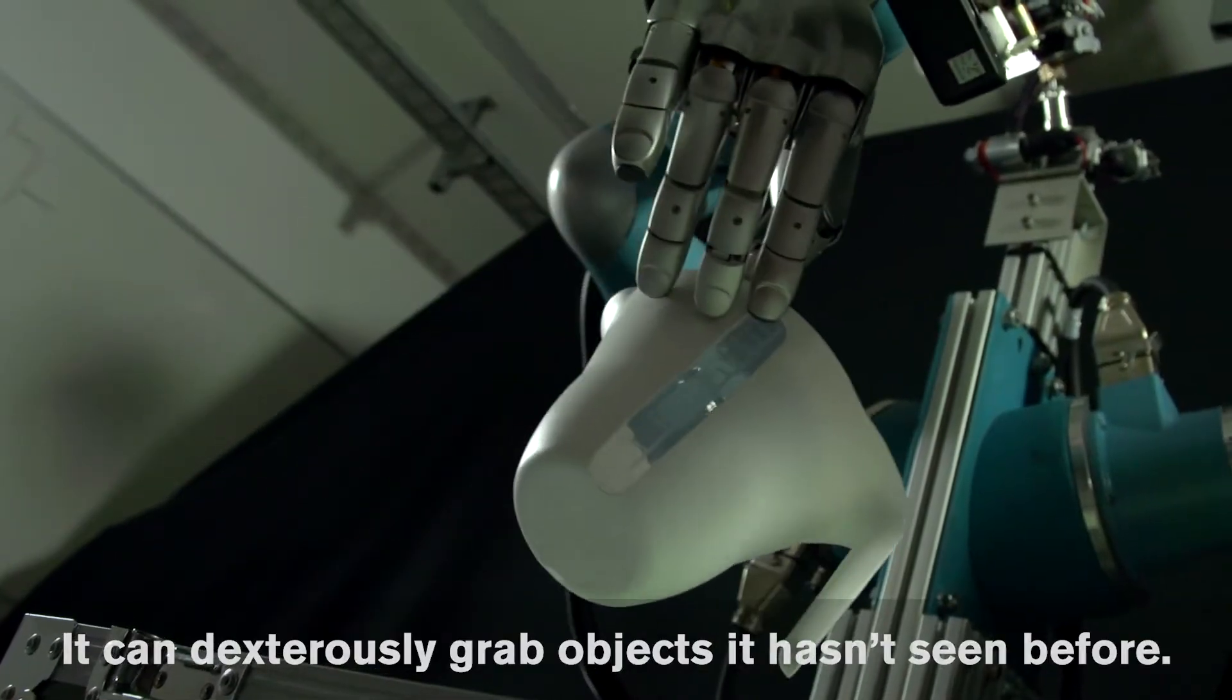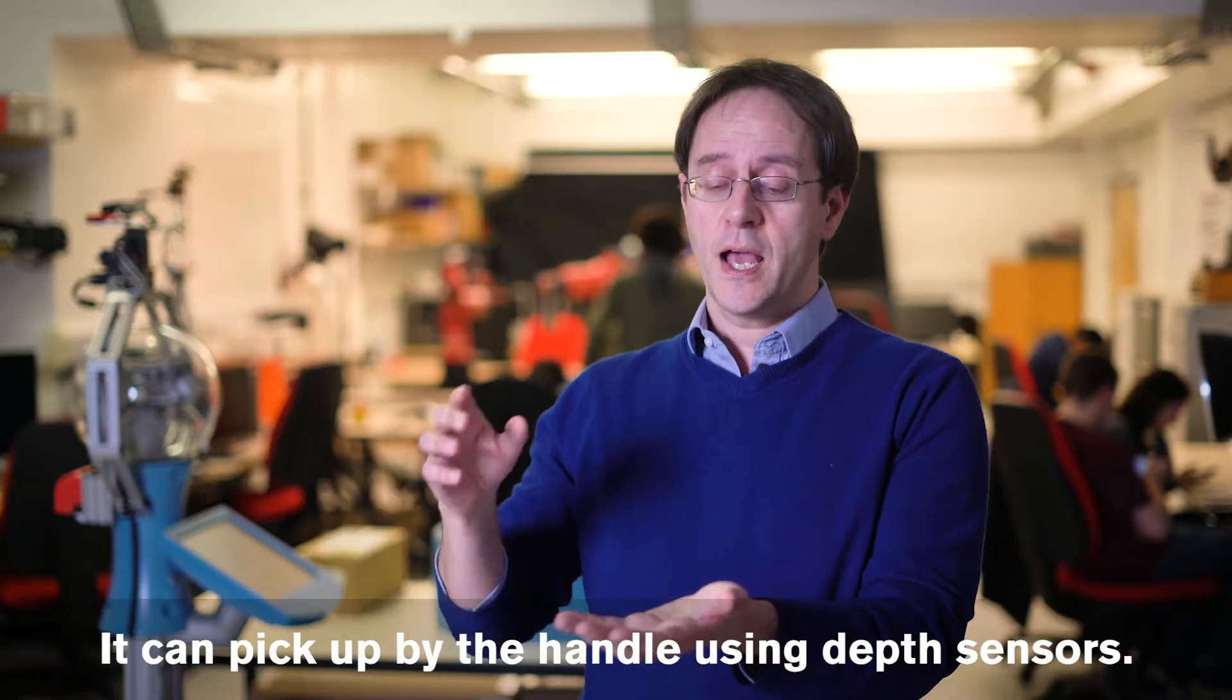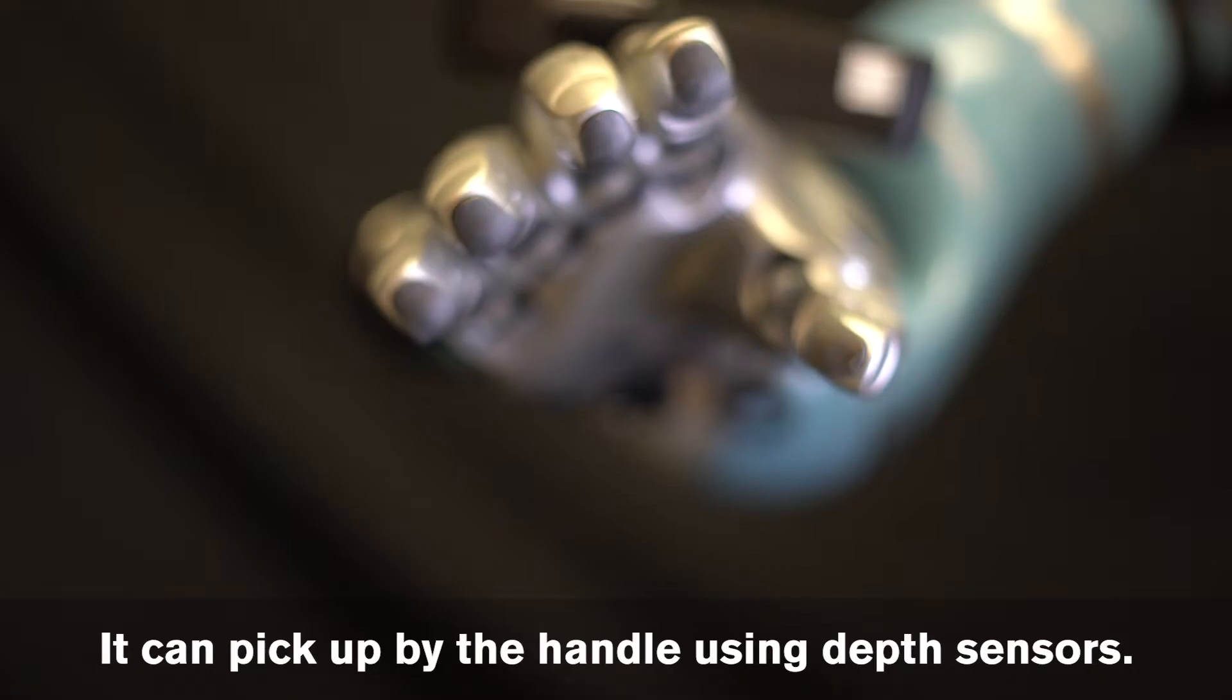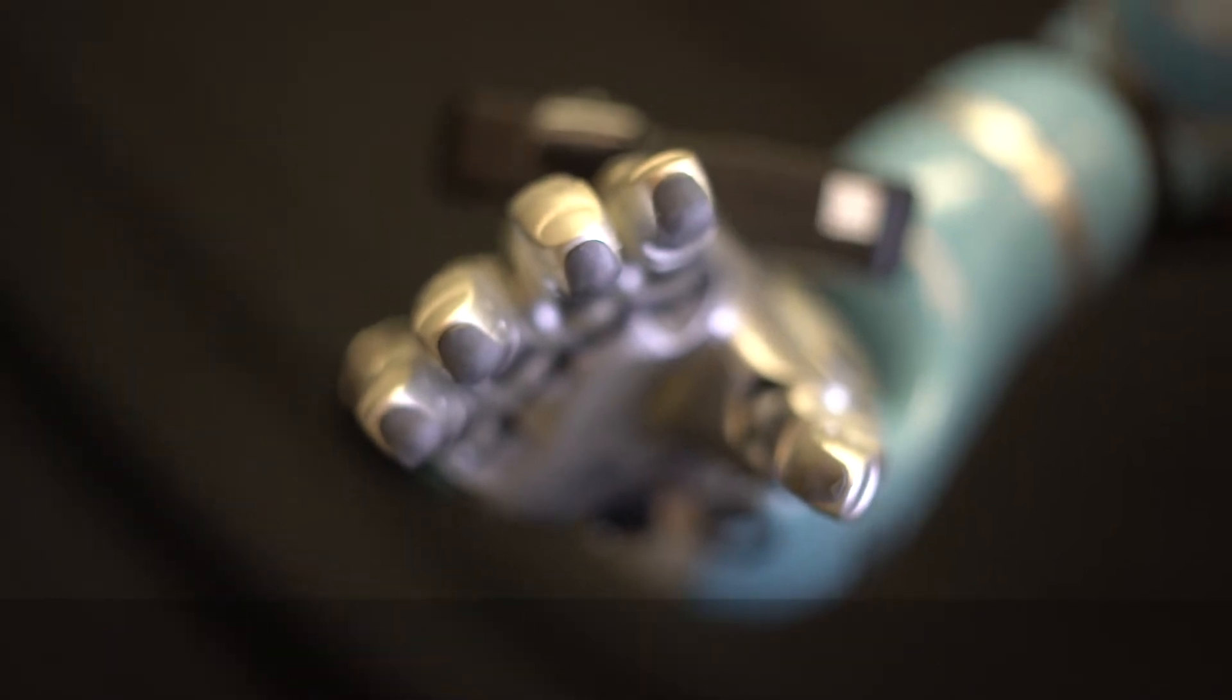So this might be for example a teacup, and you've shown it how to pick up a cup before or to pick up something with a handle, and it looks at that cup with a depth sensor. It only sees maybe a very small proportion of the cup,